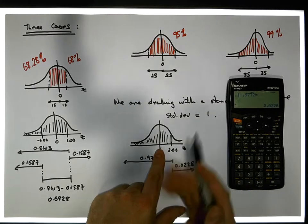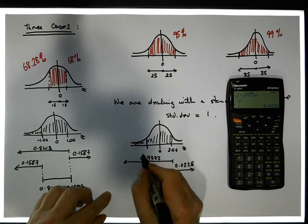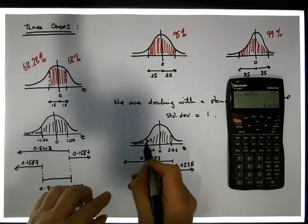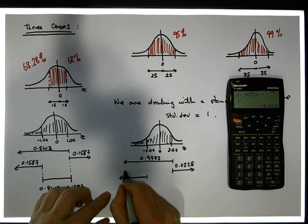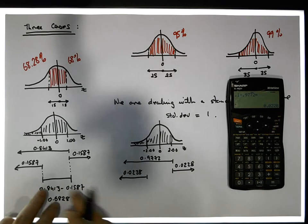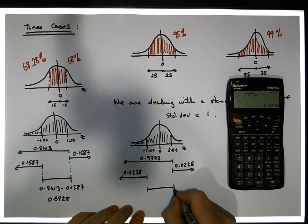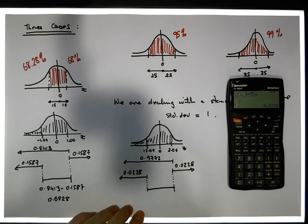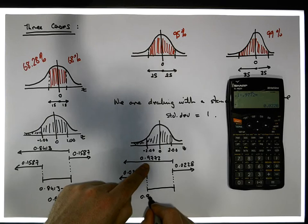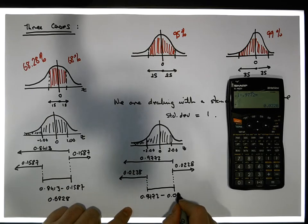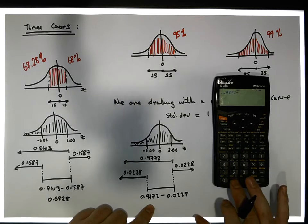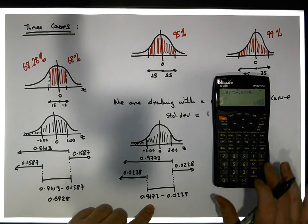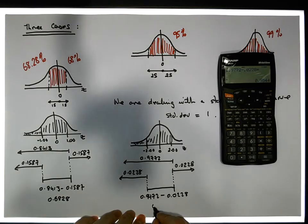Now, through symmetry, if we look at two standard deviations on the left side — that's minus 2.00 — the area in that left tail must be the same as the area in the right tail, so the area from here across must also be 0.0228. That means the area in between must be 0.9772 minus 0.0228, which gives us a value of 0.9544.